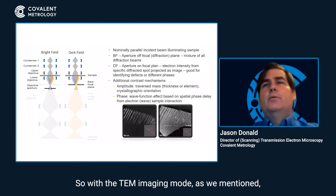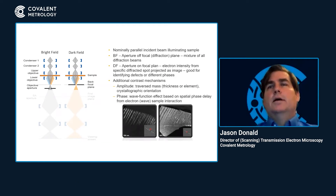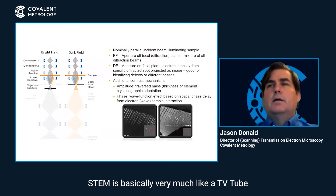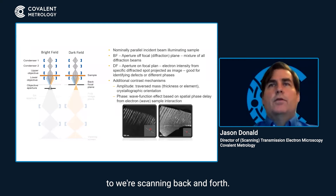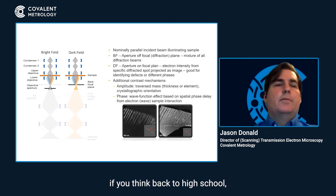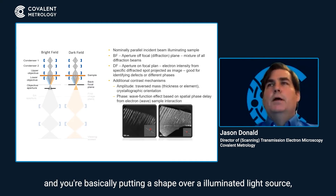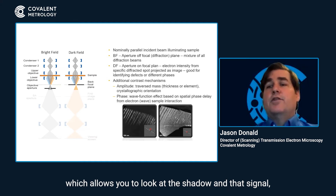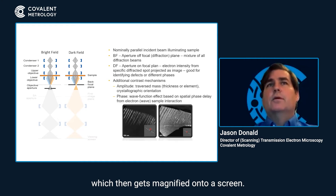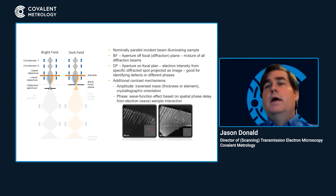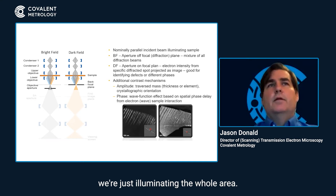With the TEM imaging mode, we also have bright field and dark field. This differs from STEM in that STEM is basically very much like a TV tube where we're scanning back and forth. TEM — the best example I can give is if you think back to high school of those transparencies a teacher would use. You're basically putting a shape over an illuminated light source, which allows you to look at the shadow and that signal, which then gets magnified onto a screen. Same thing as what's going on with TEM — it's a flood of electrons over a wide area, and we're not scanning back and forth; we're just illuminating the whole area.